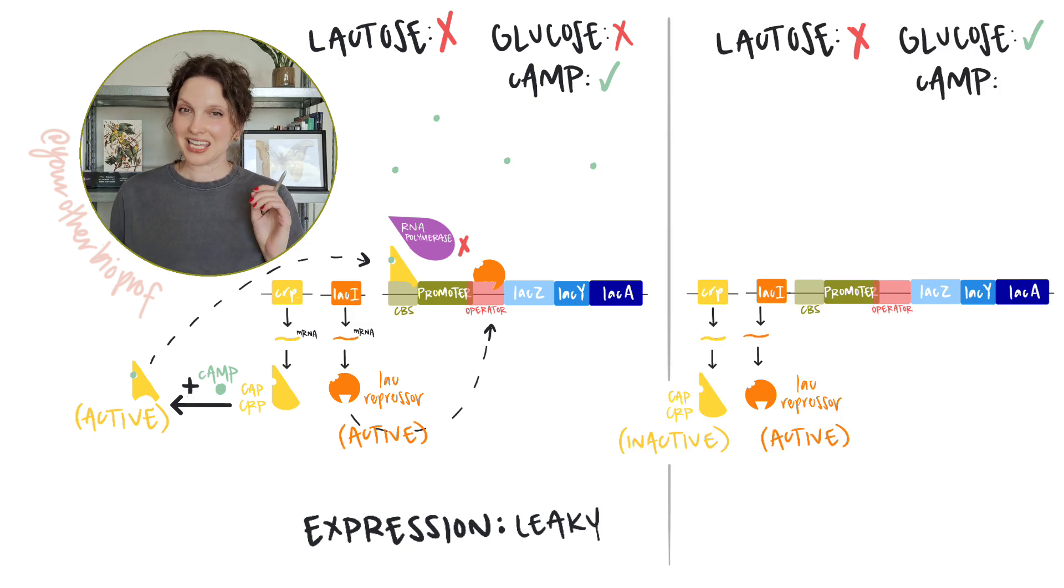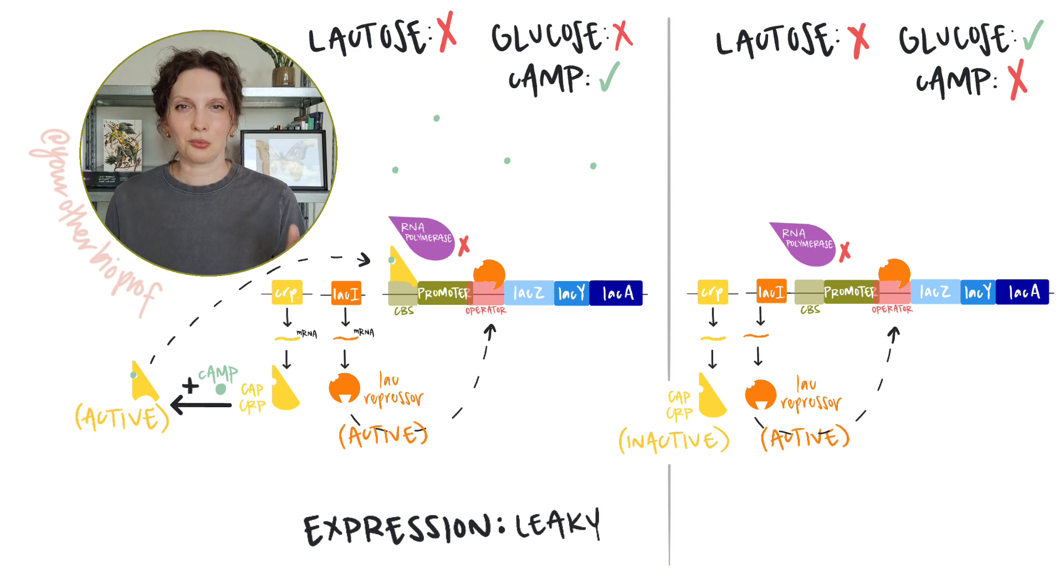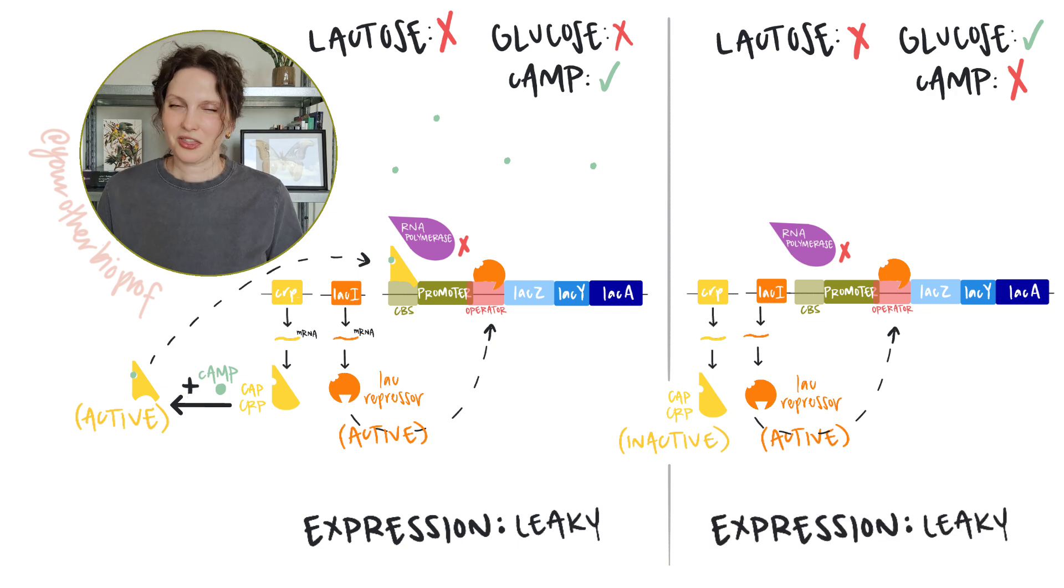And what if there is glucose, but still no lactose? Well, due to that lack of lactose, the lac operon is still repressed. Glucose availability means that cyclic AMP is going to be low. So the CAP protein won't be active and won't be giving RNA polymerase a little bit of a boost. But there's not really much expression to help boost anyway.